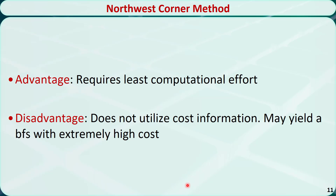The advantage of using the Northwest Corner method is that it requires the least computational effort. The disadvantage is that it does not utilize cost information, and thus it may yield a basic feasible solution with extremely high cost, requiring more simplex pivoting iterations later. This is how we find a basic feasible solution to a transportation problem using the Northwest Corner method.